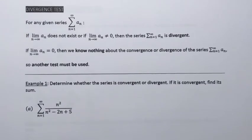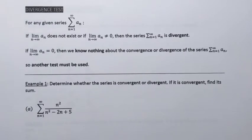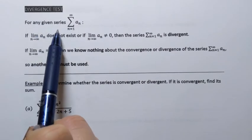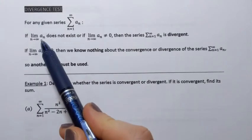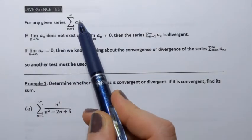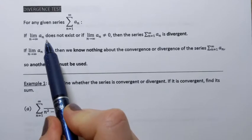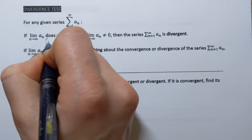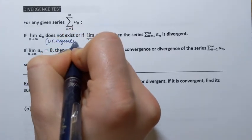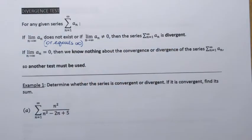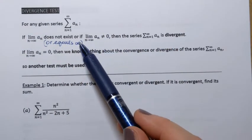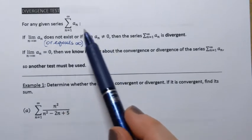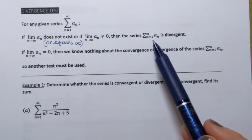In this video we're going to learn about the divergence test that can help us in some cases determine if a series is divergent. For any given series, if we take the limit of a general term that defines that series and find that this limit does not exist — including the case when it equals infinity — or if that limit exists but it's a non-zero number, then in all those cases the series is divergent.